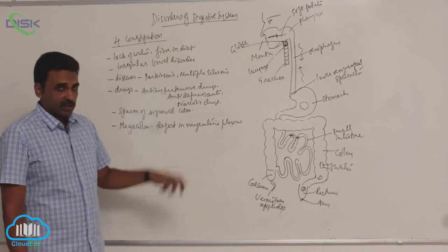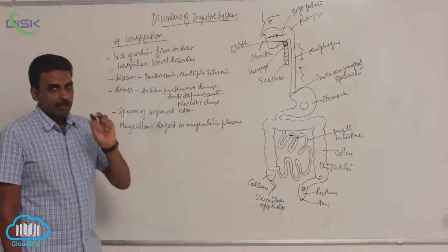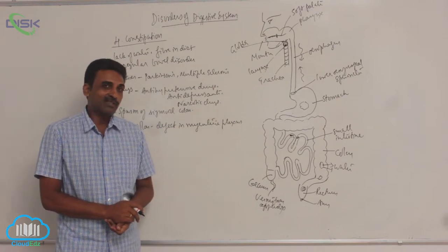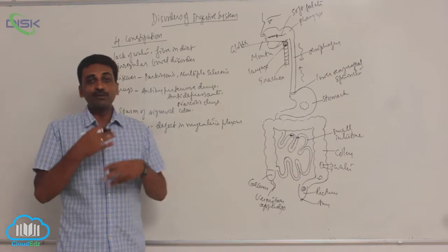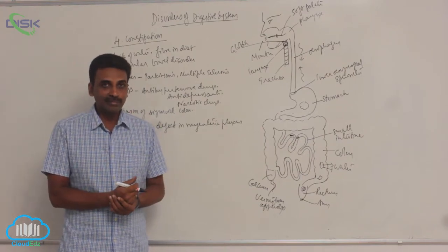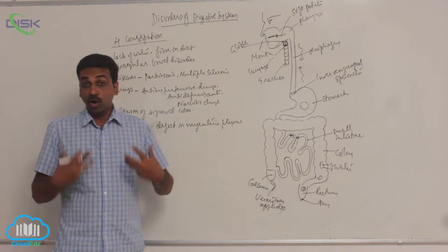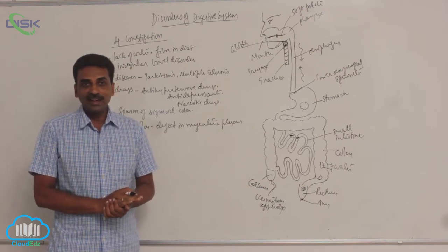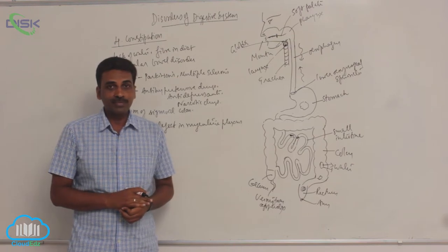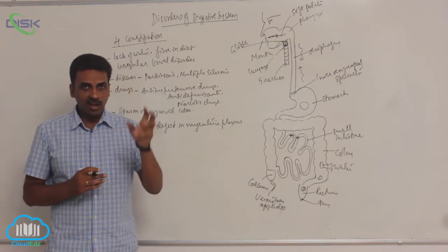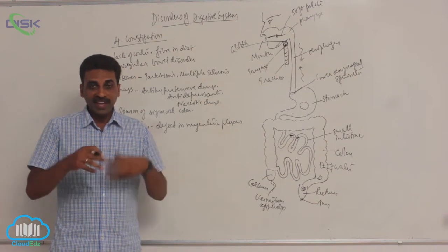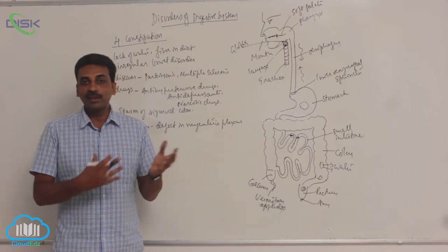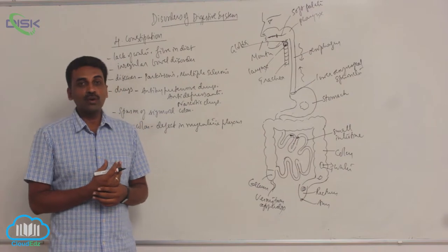The major factors which result in constipation include lack of fiber and water in diet. After eating food, we should take good quantities of water. Water is the medium of life. The complete digestive process occurs with the help of hydrolases, which are enzymes that act in the presence of water. If there is no water, digestive enzymes are not working properly, and the process of digestion is not going on properly.